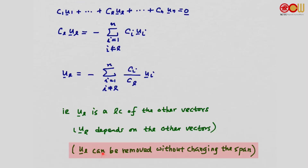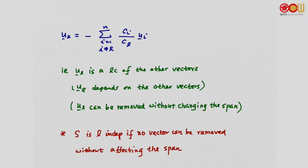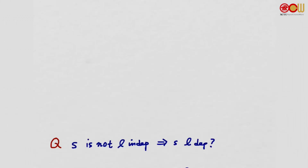From the results in section 1.6, we know u_l can be removed without changing the span. When a set is linearly dependent, we can always find a vector that is a linear combination of the other vectors — it depends on them — so we can always remove a vector without changing the span. In the linearly independent case, no vector can be removed without affecting the span.